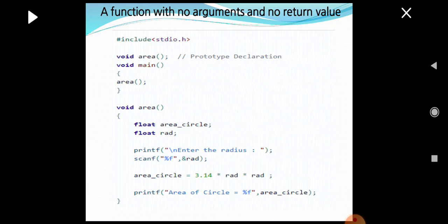In this program given as an example, void area is the global declaration of the function. In the main function, the function area is called. In the definition of the function, we get rad, which is the variable that holds the radius value, and the final result stored in the variable area_circle is printed using the printf statement. Here we can see there is no argument and no return value.